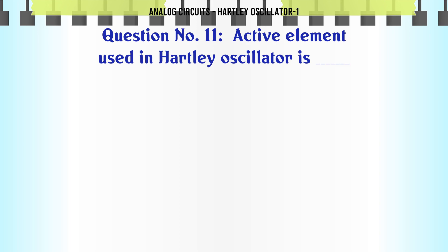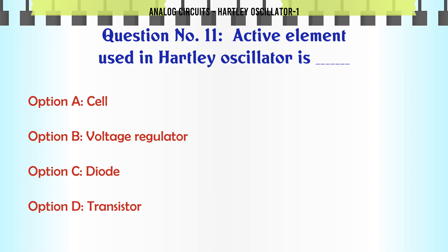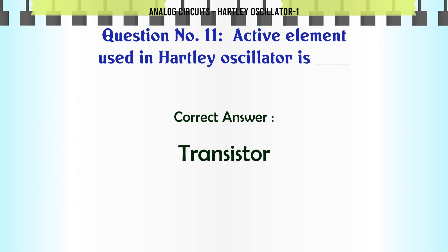Active element used in Hartley oscillator is: A: cell, B: voltage regulator, C: diode, D: transistor. The correct answer is transistor.